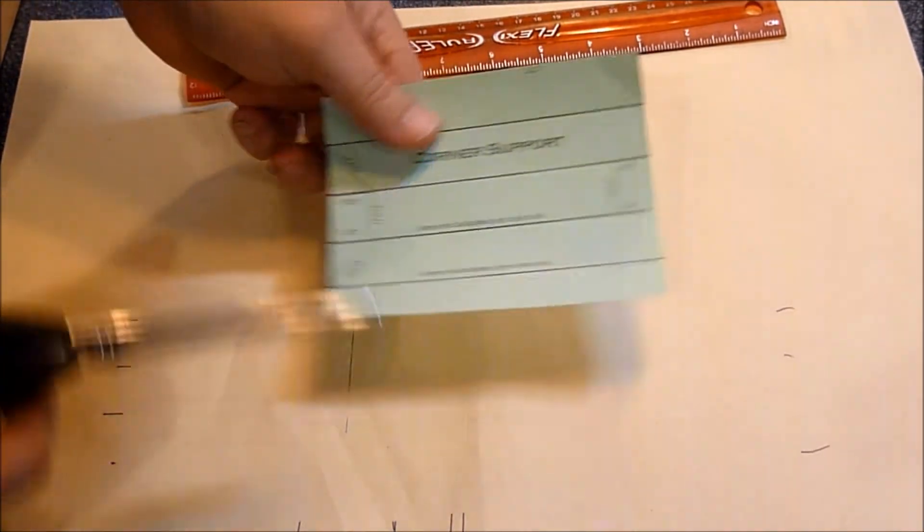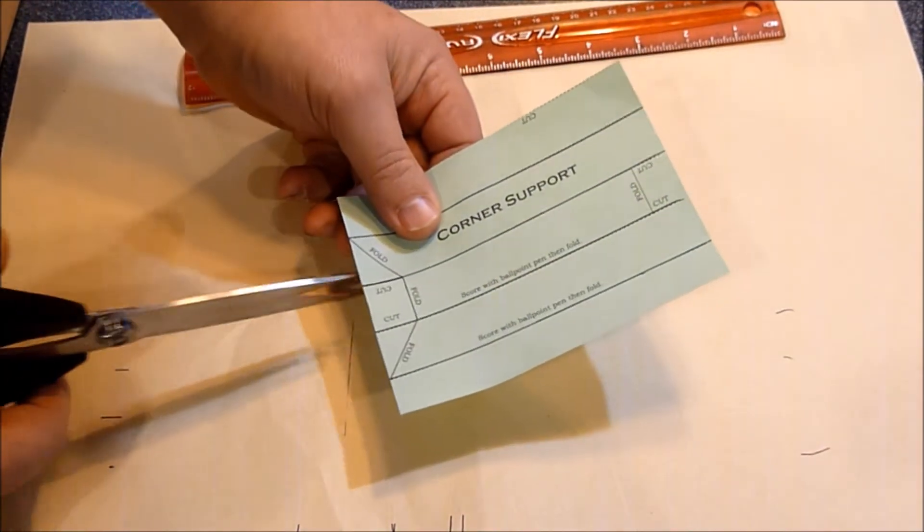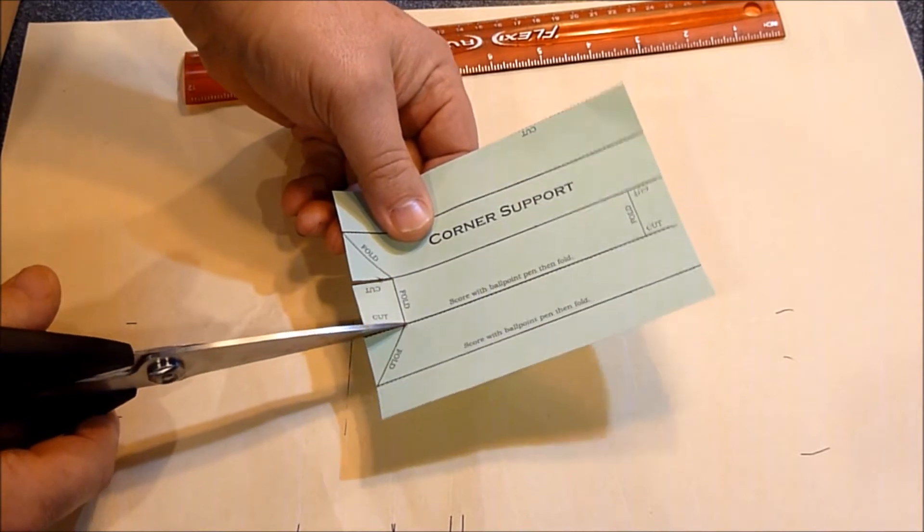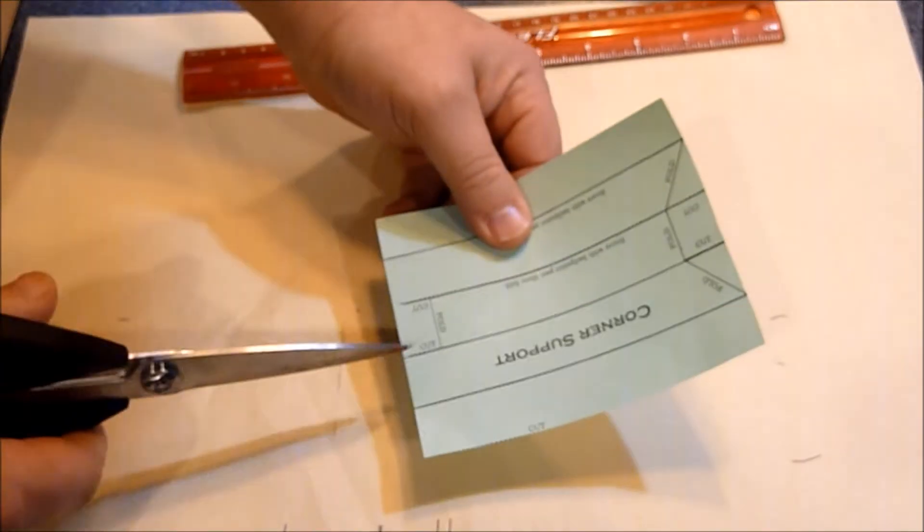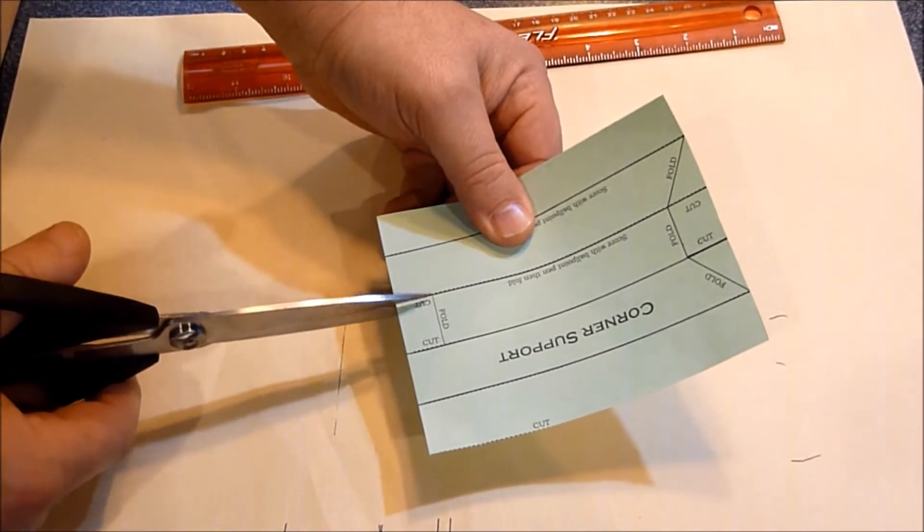Now you have to make two more cuts. You make a cut here and here, up to the fold line. And then you make a cut here and here, up to the fold line.